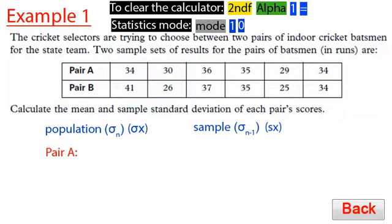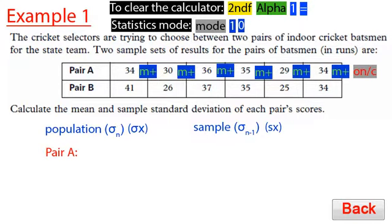So let's enter this data. In Pair A, we have the number 34, then go M+. Then 30 M+, 36 M+, 35 M+, 29 M+, 34 M+. Now the red on clear button, we can push that, and the calculator still remembers all those numbers you put in. So to find the mean, we need to look for X bar. X bar is above the 4 in green. Let's push alpha 4 equals. You will get X bar equals 33, meaning we have a mean of 33.